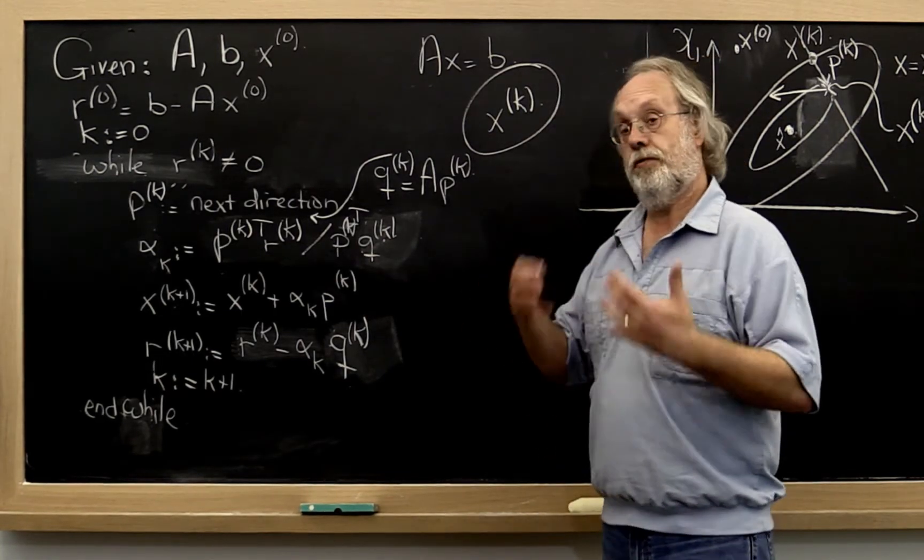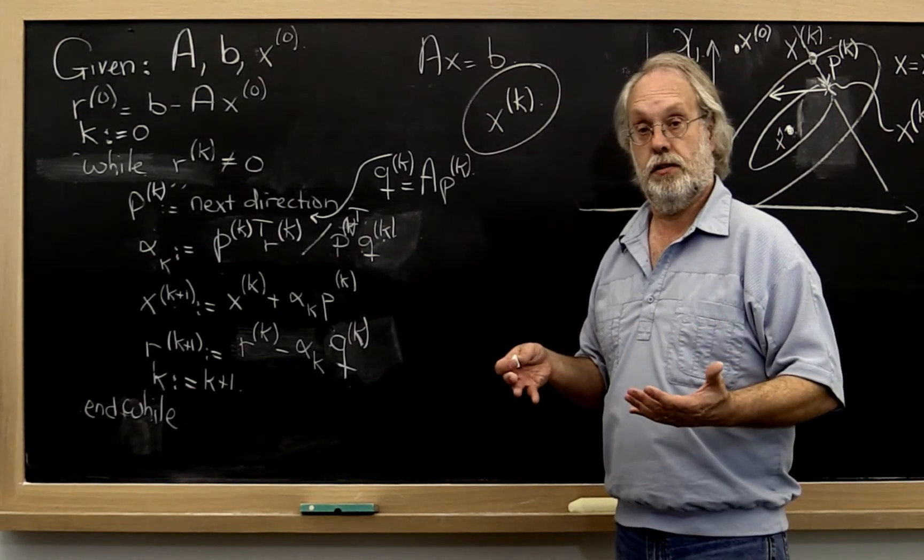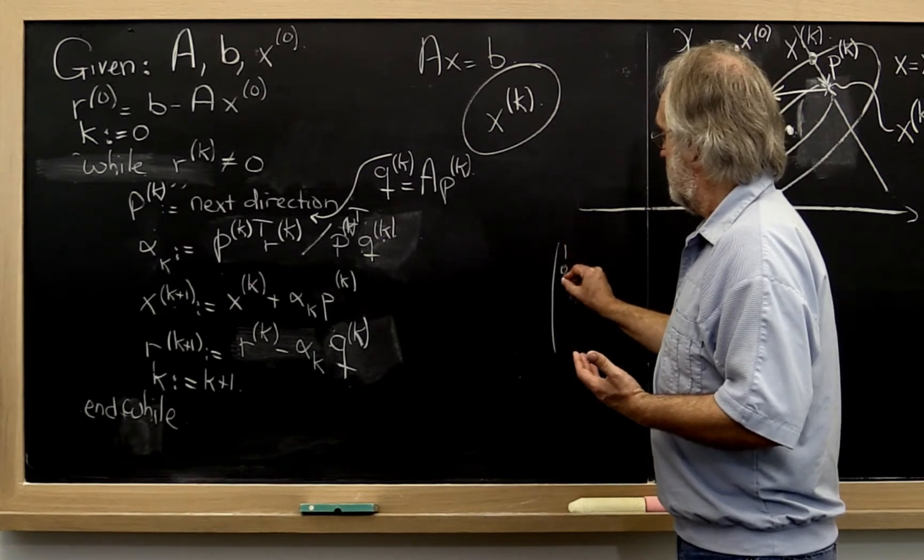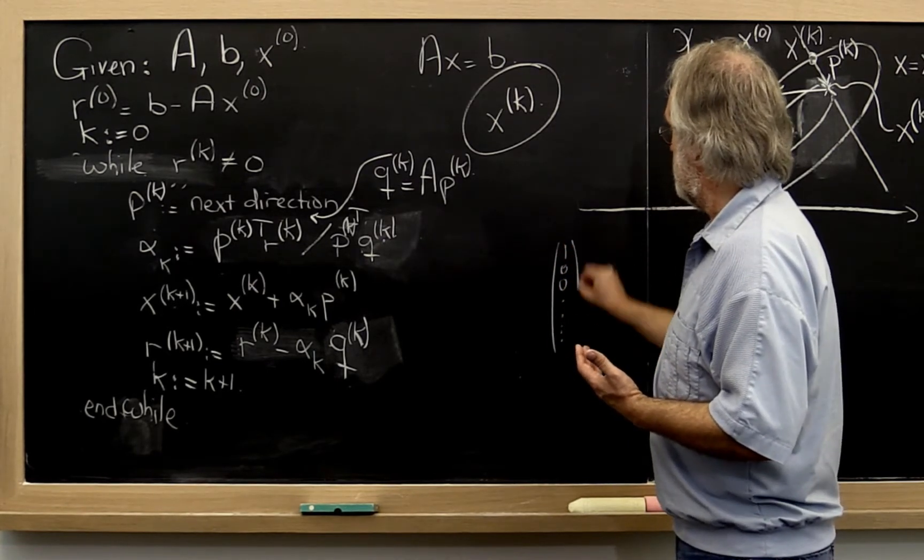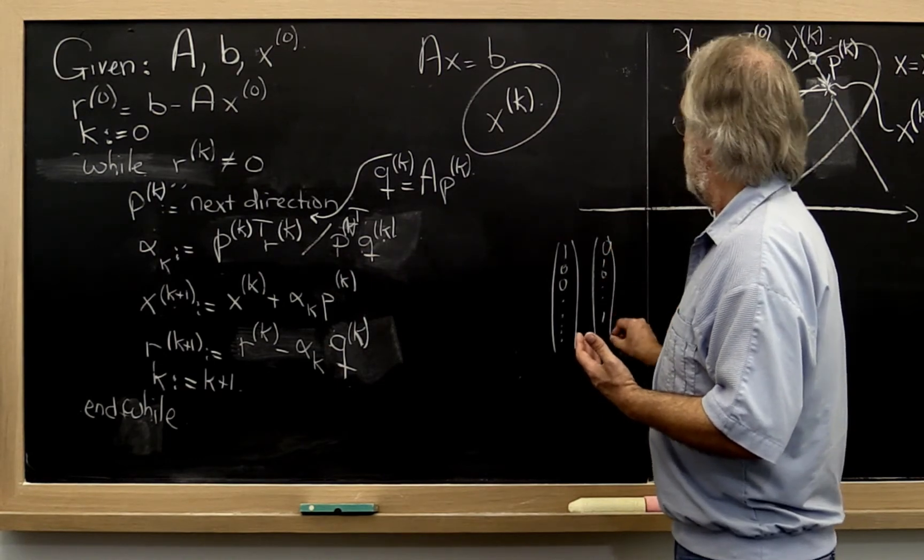But the next most convenient set of vectors are the standard basis vectors. Remember, these are the vectors where you have a 1 - that's the first standard basis vector - and then you have the second standard basis vector, and so forth.